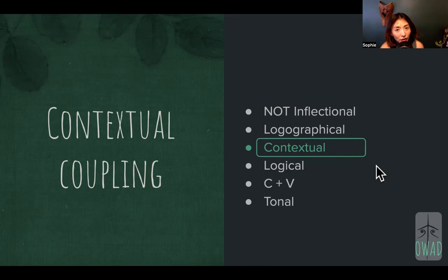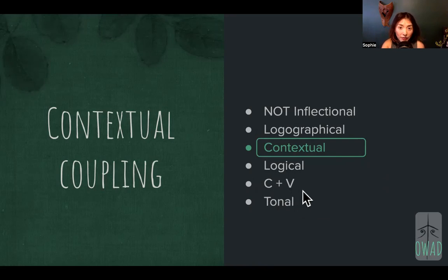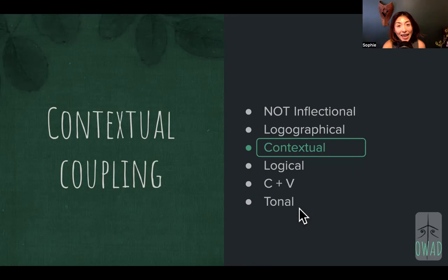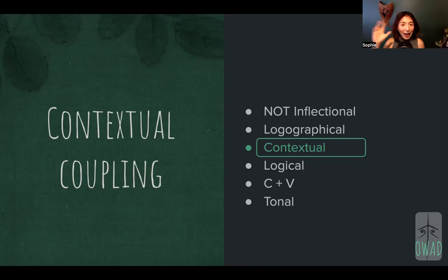Chinese only has one consonant plus one vowel making one audible sound — always containing a vowel, since without a vowel you don't have a sound. Because the combinations are so limited, Chinese adds another dimension: tones. Chinese is notorious for its four tones. If you attach a different tone to the same consonant-vowel combination, it's a completely different meaning, which can sometimes be accidentally funny.